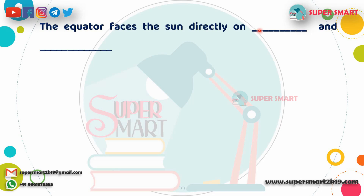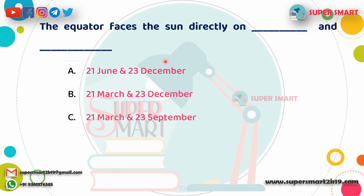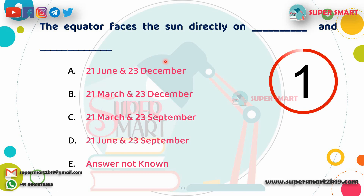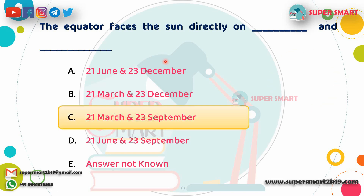Next question: The equator faces the Sun directly on which dates? Answer: 21st March and 23rd September.